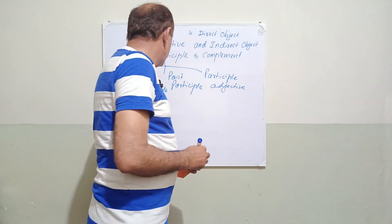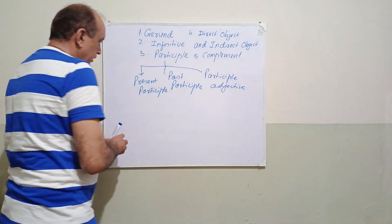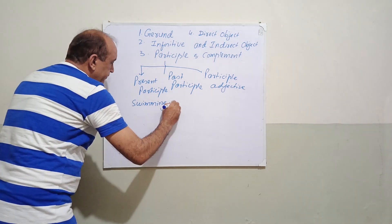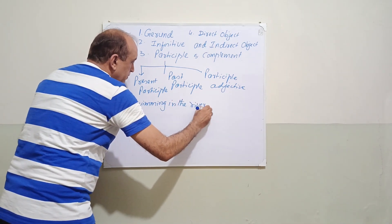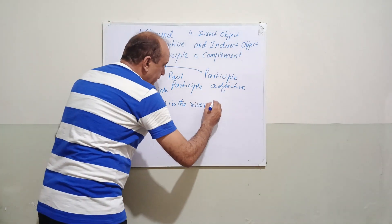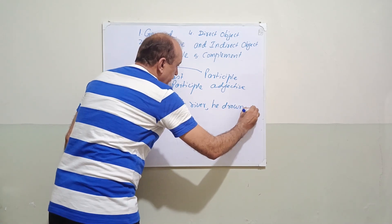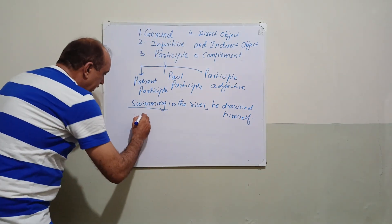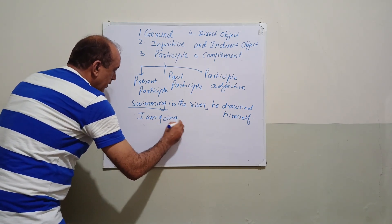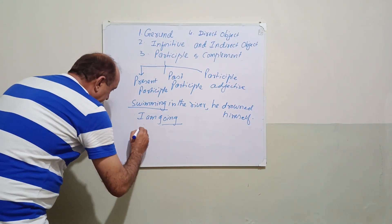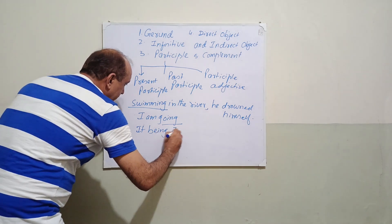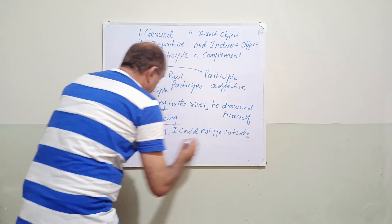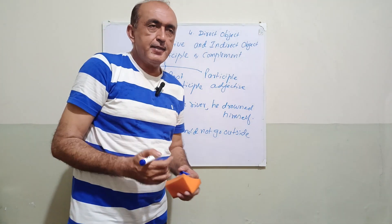Present participle examples: swimming in the river, he drowned himself — here swimming is present participle. Another example: I am going — going is present participle. It being late, I could not go outside — this is another example of present participle.